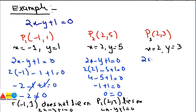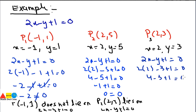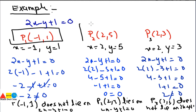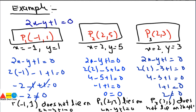Now checking P3: 2x minus y plus 1 equals 0 with x equals 2 and y equals 3 gives 4 minus 3 plus 1 equals 0, then 1 plus 1 equals 0, so 2 equals 0. Since 2 is not equal to 0, P3(2, 3) does not lie on the line. So P1 does not lie on the line, P2 lies on the line, and P3 does not.